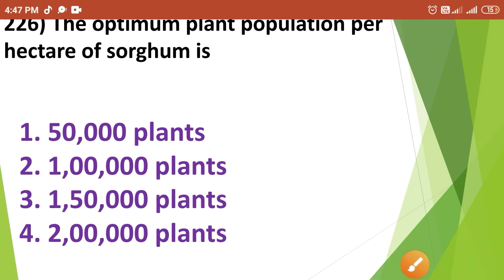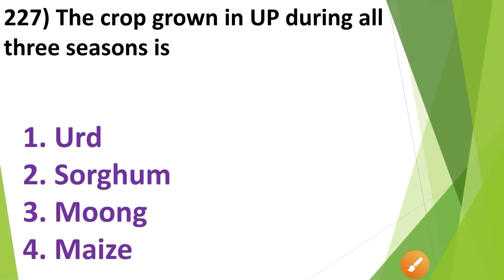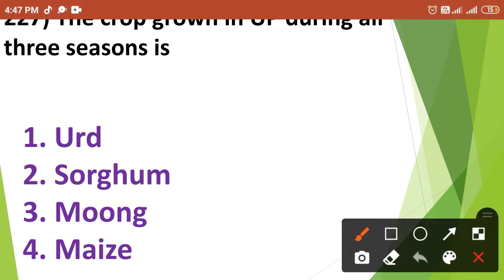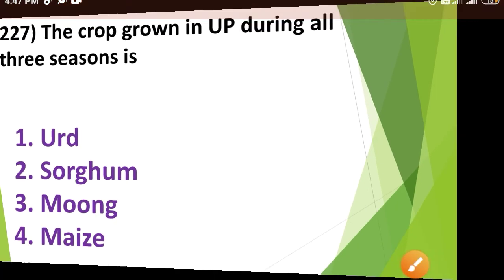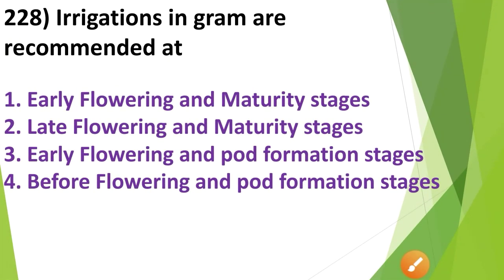The crop grown in Uttar Pradesh during all three seasons is: 1. Urad, 2. Sorghum, 3. Mung, 4. Maize. The crop grown in Uttar Pradesh during all three seasons is Option No. 4 — maize.